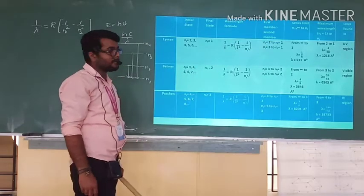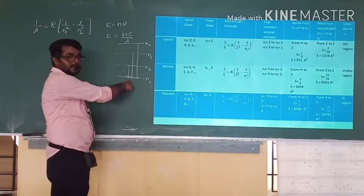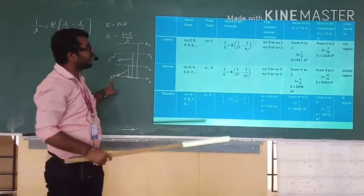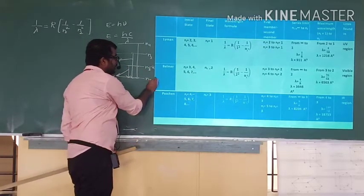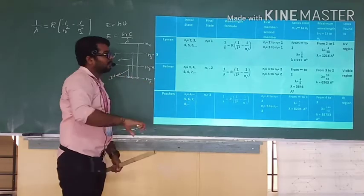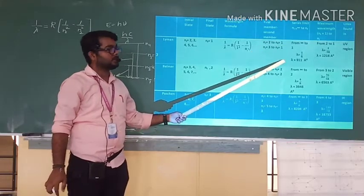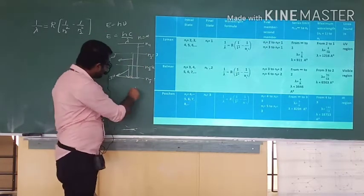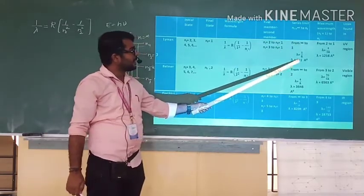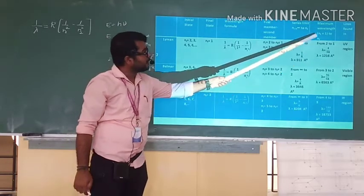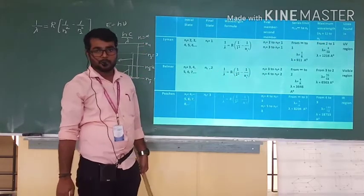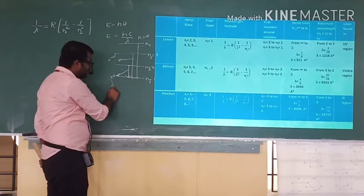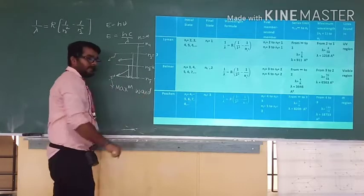For the Lyman series, the first line is N = 2 to N = 1, the second line is N = 3 to N = 1, and the series limit is infinity to N = 1. The series limit gives λ = 1/R, which is the maximum wavelength formula for the series limit. The first excited state transition to the ground state gives maximum wavelength, and maximum wavelength corresponds to minimum energy.